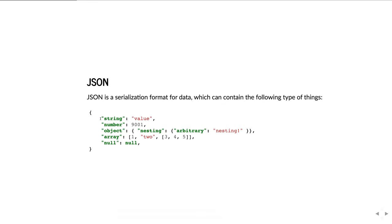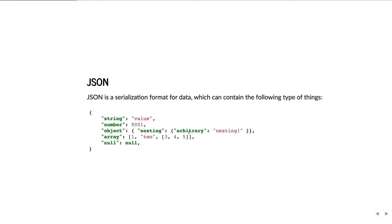JSON can contain strings — character lists, text values — it can contain numbers, it can contain objects which are collections of values with a key-value structure, and you can arbitrarily nest those. It can contain arrays, which are essentially ordered lists of things that can contain any of the various types including other objects and arrays. It contains a special null value which signifies that there's nothing there, and it also accepts true and false.